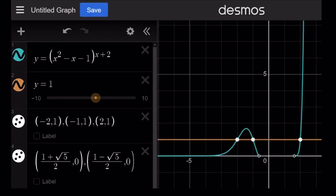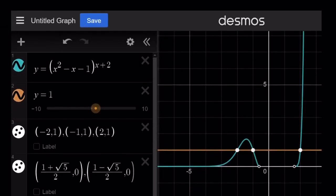So here's the graph of y equals x squared minus x minus 1 to the power x plus 2, and y equals 1. Y equals 1 is a horizontal line, and our graph is kind of curving up and down. So there seems to be three intersection points. So according to the graph, we have three solutions. x equals negative 2, x equals negative 1, and x equals 2. But we're supposed to have four solutions. Remember, when we wrote out the solutions, we got negative 2, we got 0.